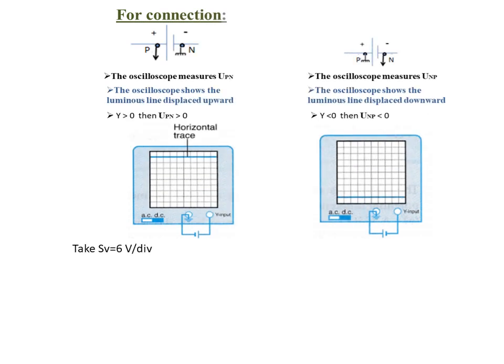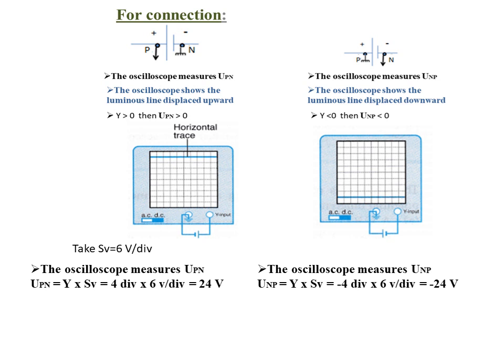Let's take Sv = 6 volts per division as an example. In the first case, the oscilloscope measures U_pn. Y = 4 divisions above the horizontal axis. U_pn = Y × Sv = 4 divisions × 6 volts per division = 24 volts.